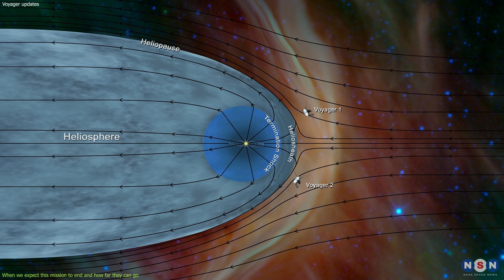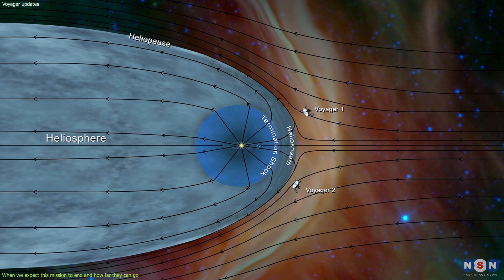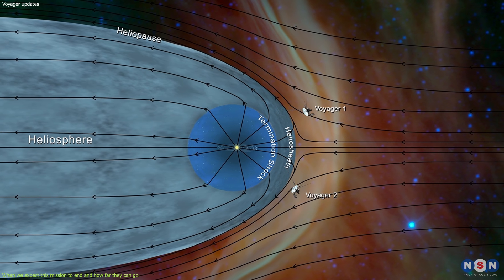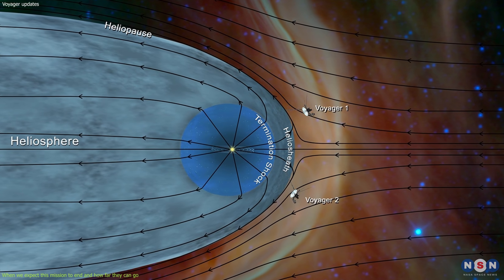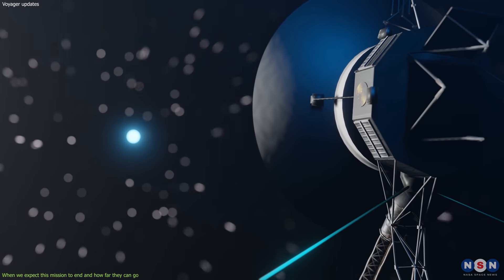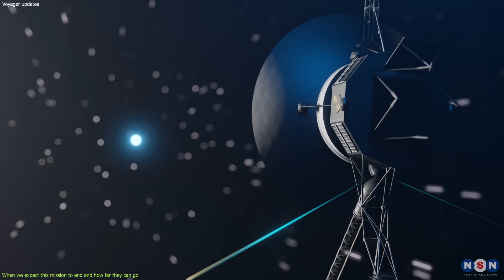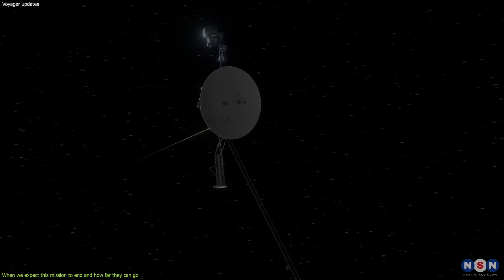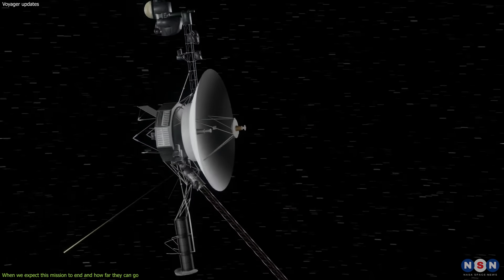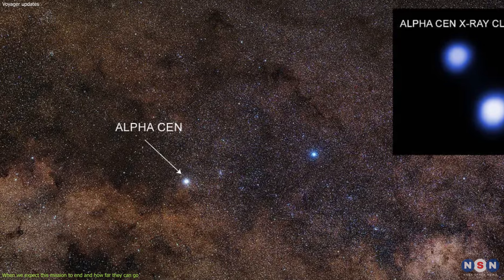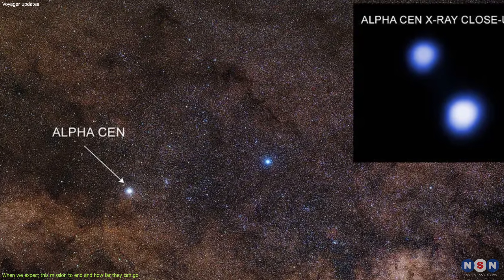They are both in interstellar space, which means they have left the influence of our Sun's magnetic field and solar wind. They are traveling at speeds of about 17 kilometers per second. At this rate, they will reach the nearest star system, Alpha Centauri, in about 40,000 years.